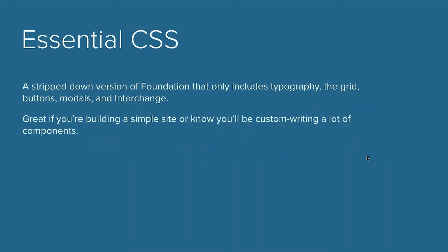So again, Essential CSS is a little bit different than the default. It is a stripped-down version of Foundation that only includes typography, the grid, buttons, modals, and interchange. And it's really great if you're building a simple site where you know you're going to be custom-writing a lot of components.